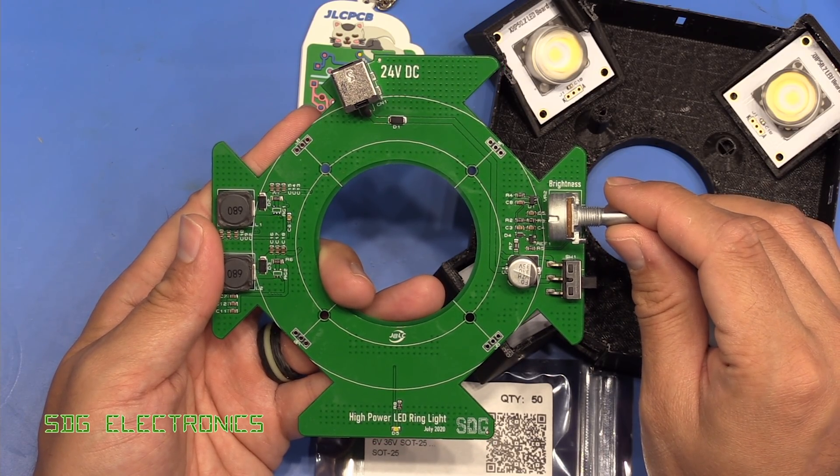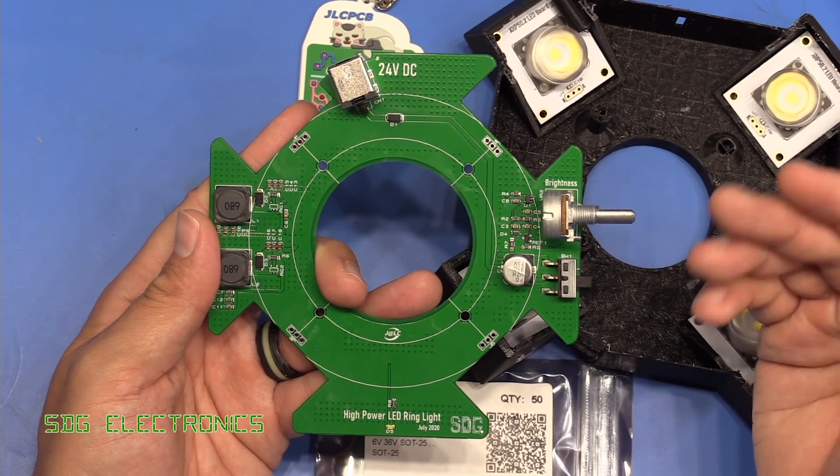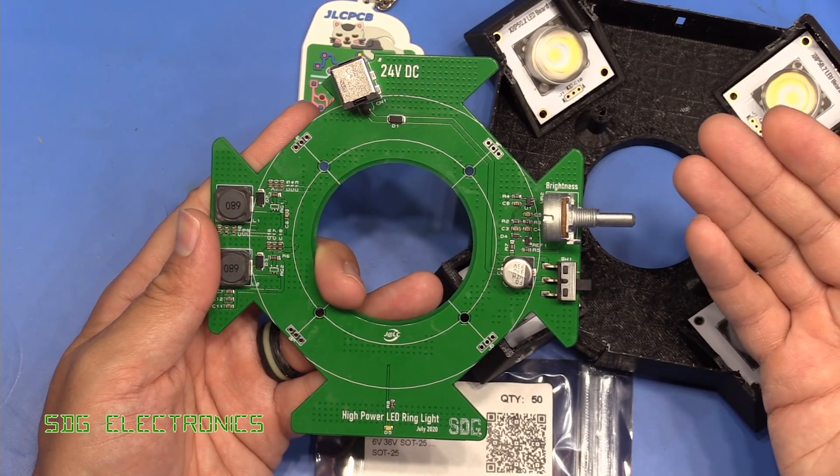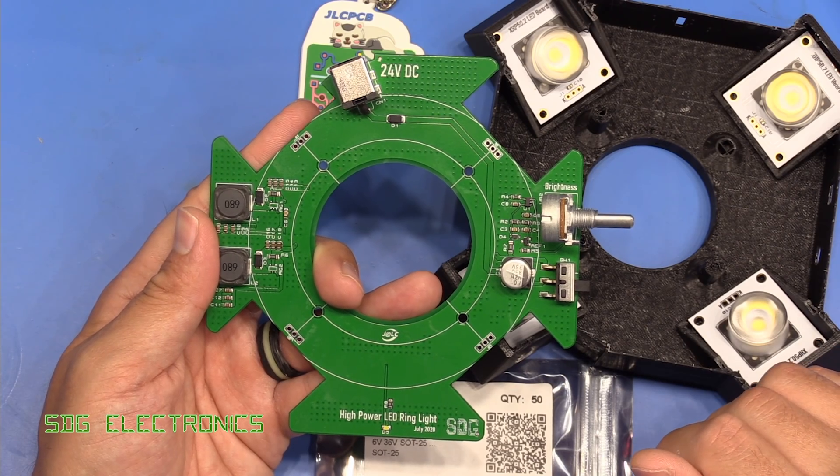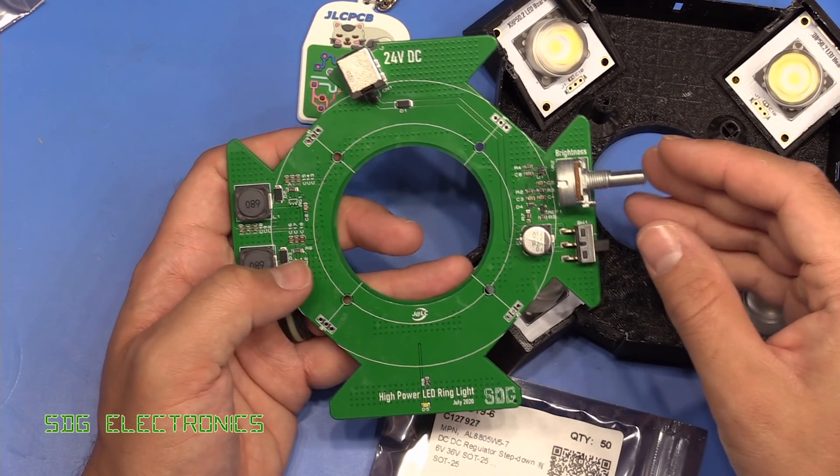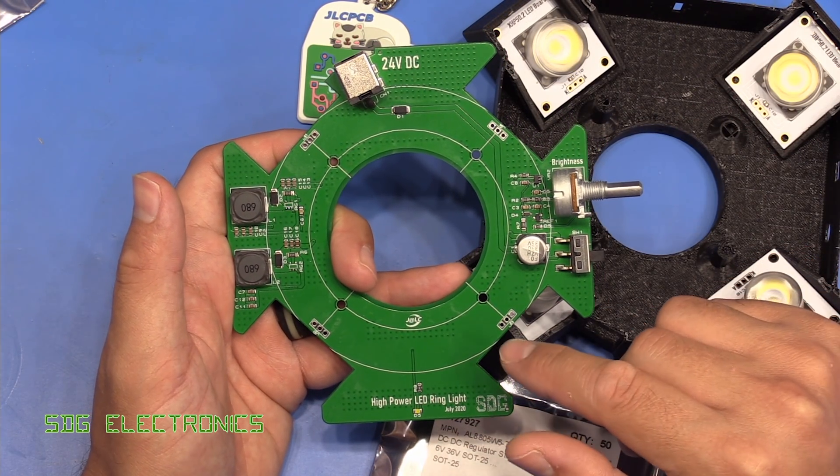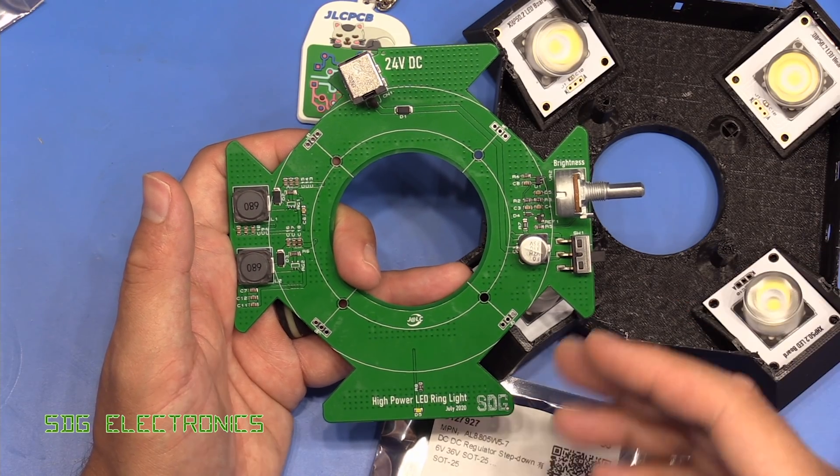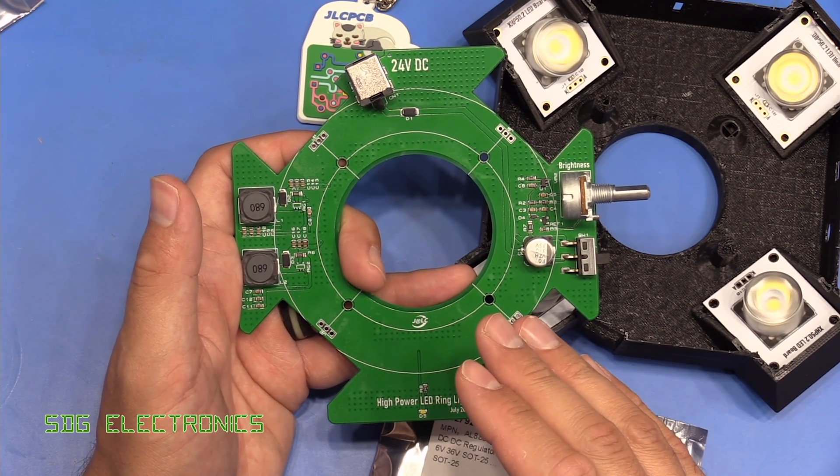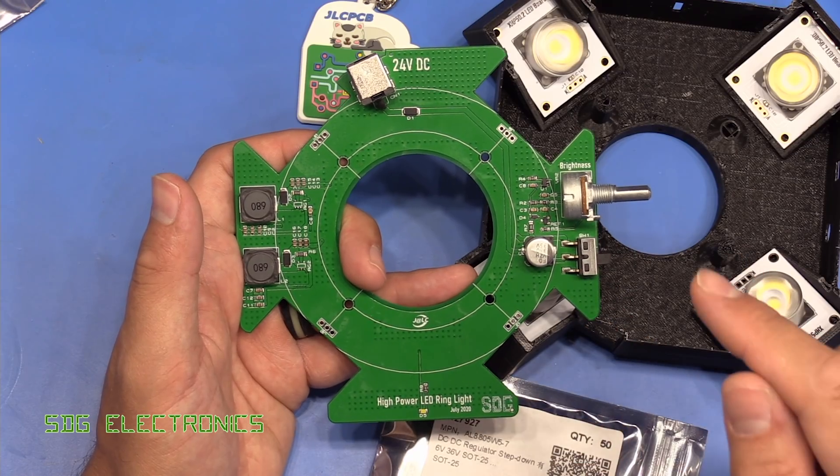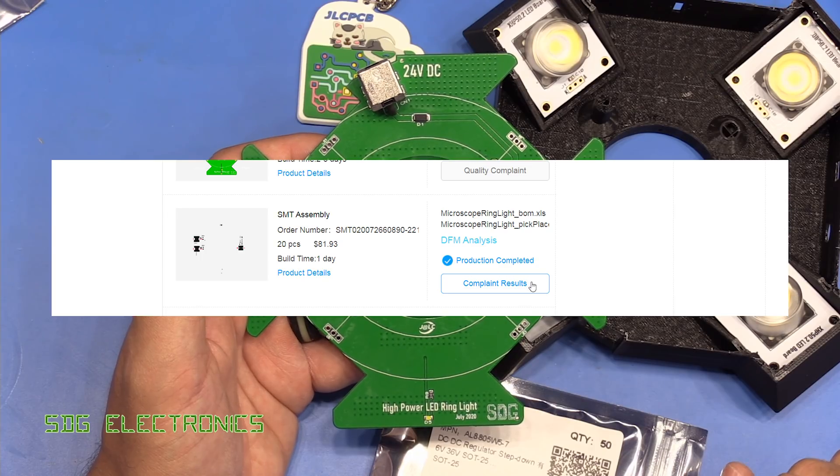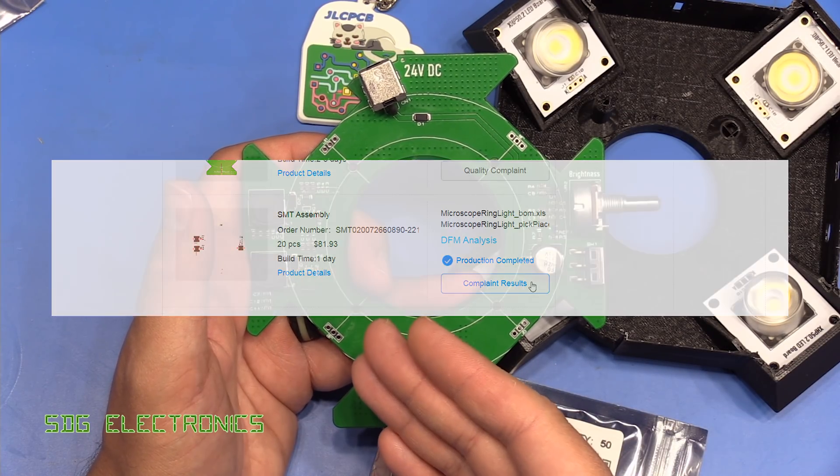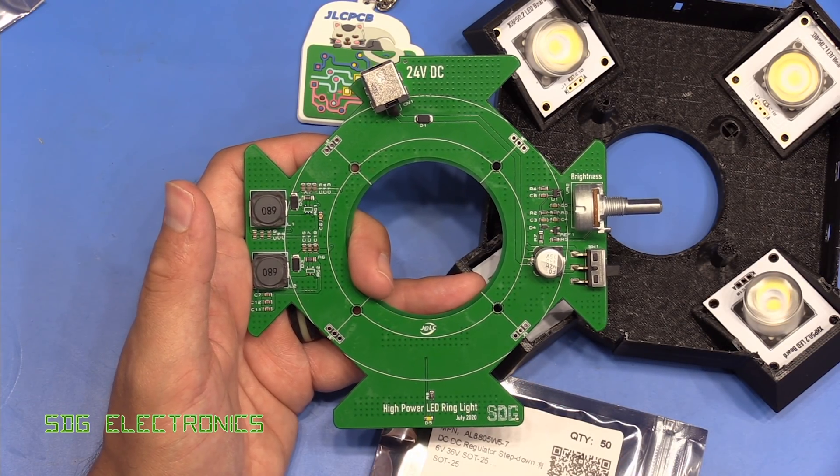So I think where that basically leaves us is either JLCPCB had some problems with some parts that they had delivered, or something went wrong in the assembly process. Now I know many of you will be keen to hear what the resolution from JLCPCB was. And whenever you place an order on JLCPCB, if you go to your order history, along with each line item, there is a button you can click on that says quality complaint. So I clicked on that button and described the issue that I was having with these PCBs.